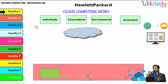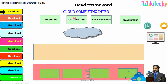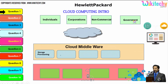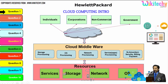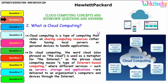There are different types of users — individuals, corporations, non-commercial organizations, and government. From any of these users, they are able to access services, storage, networks, or operating systems via cloud middlewares. These are specialized software provided by the cloud service provider to access resources. This is how the cloud computing architecture works.